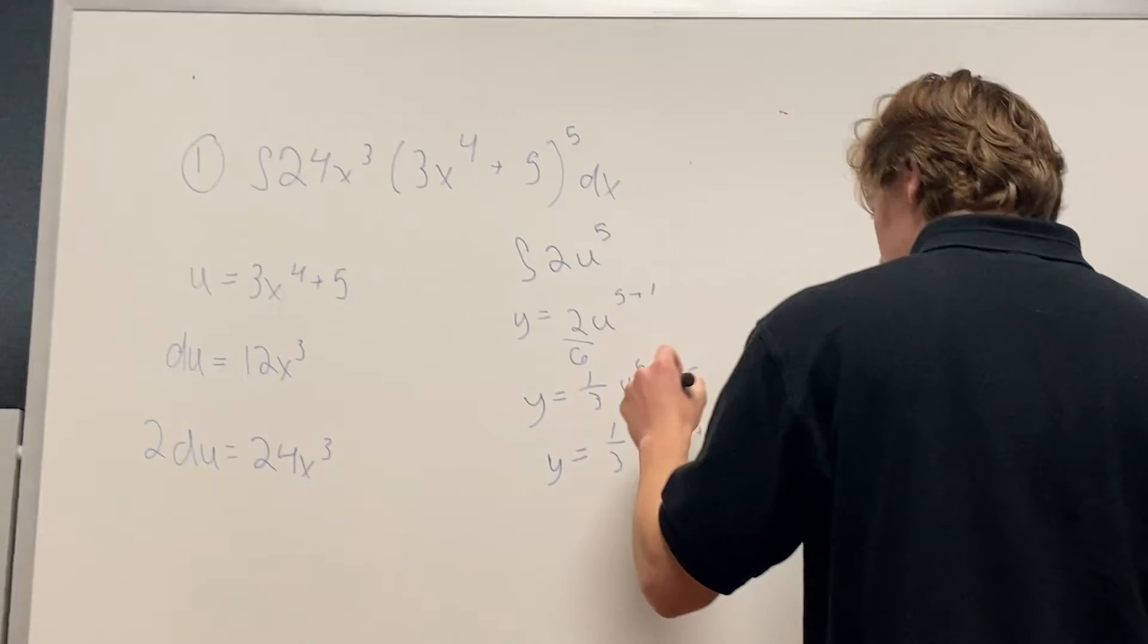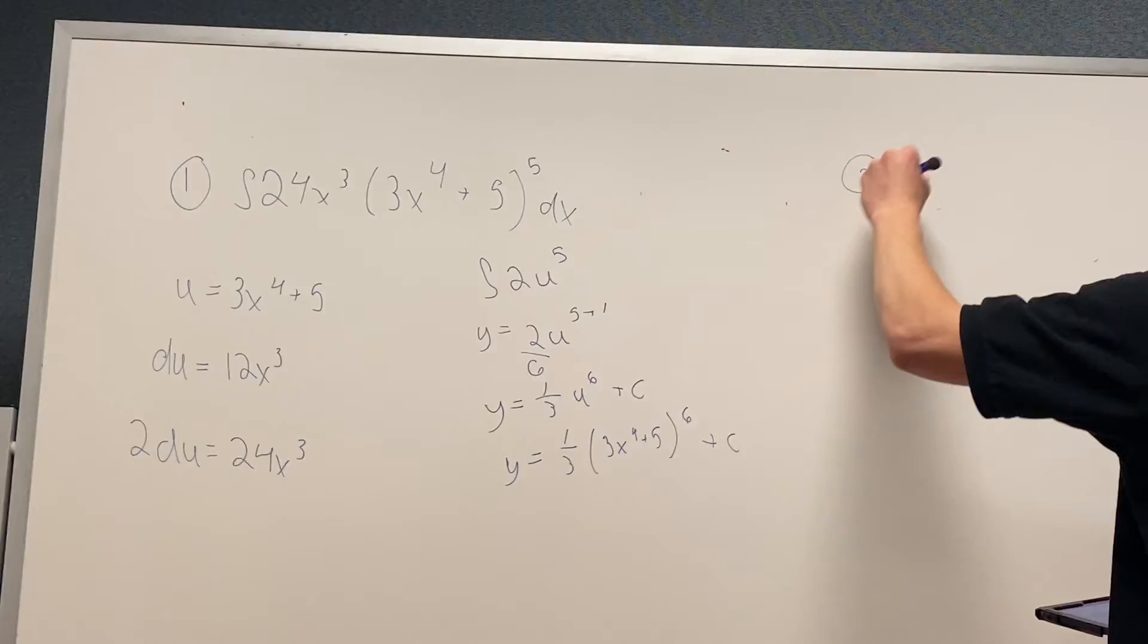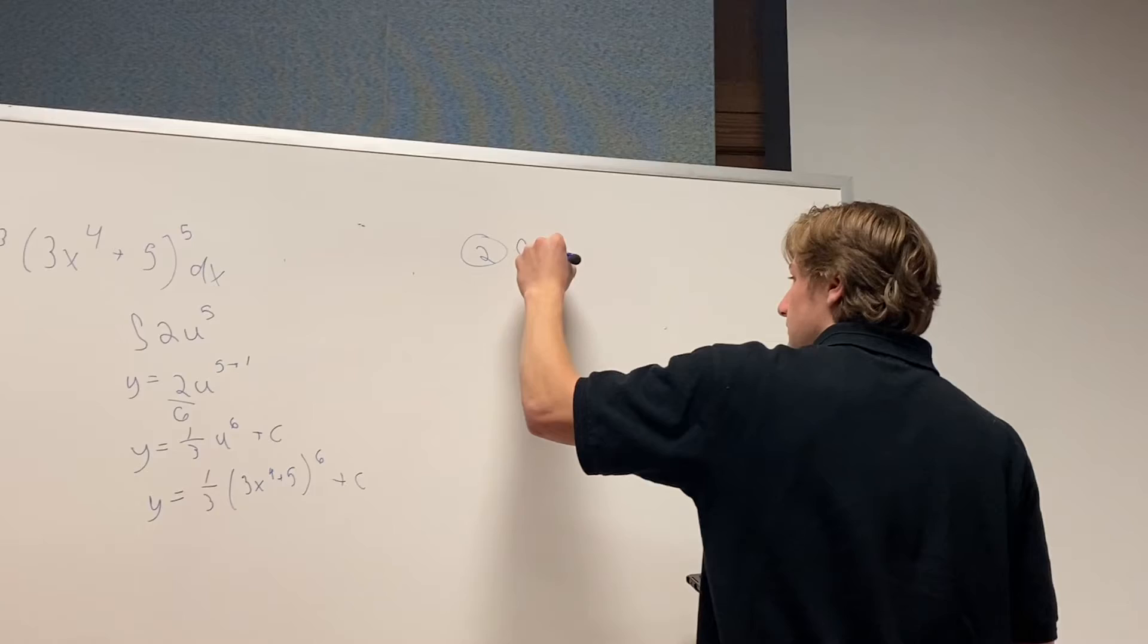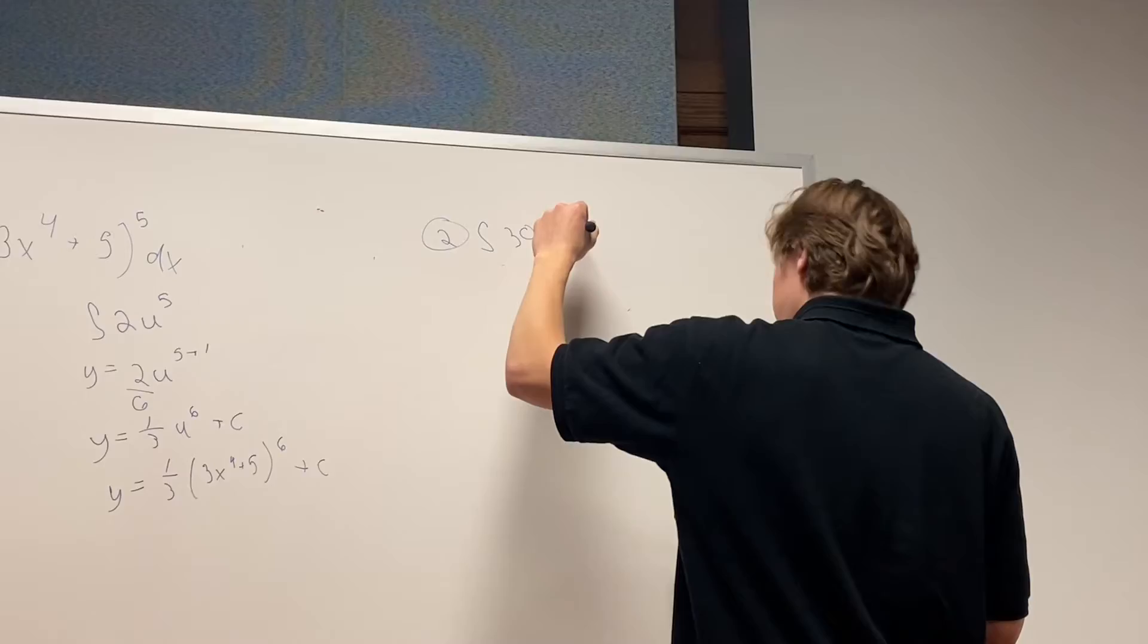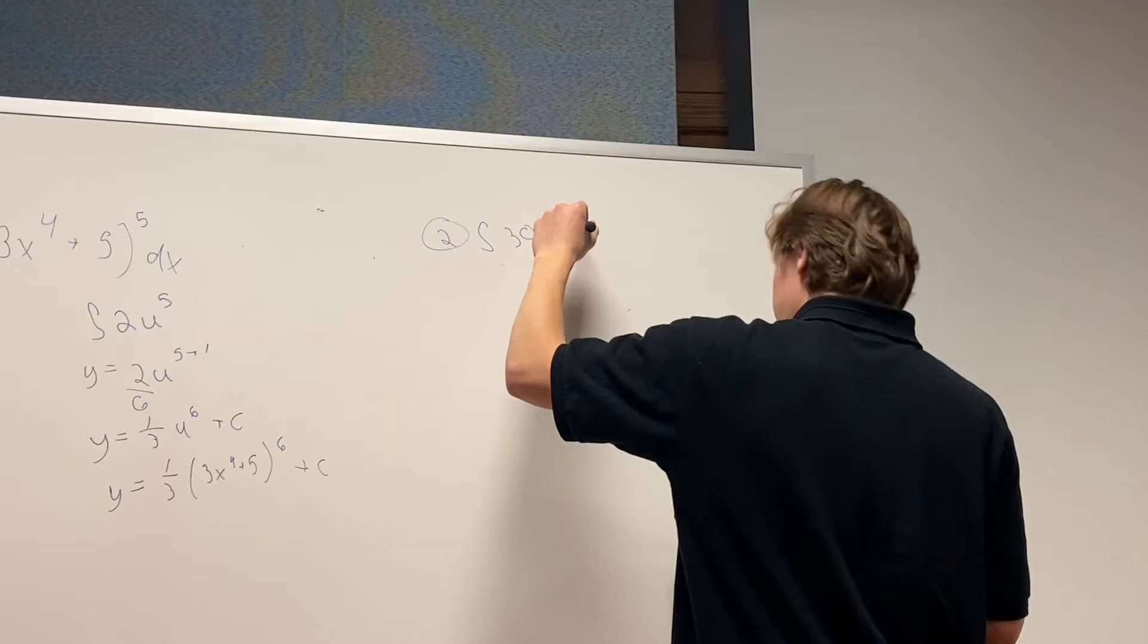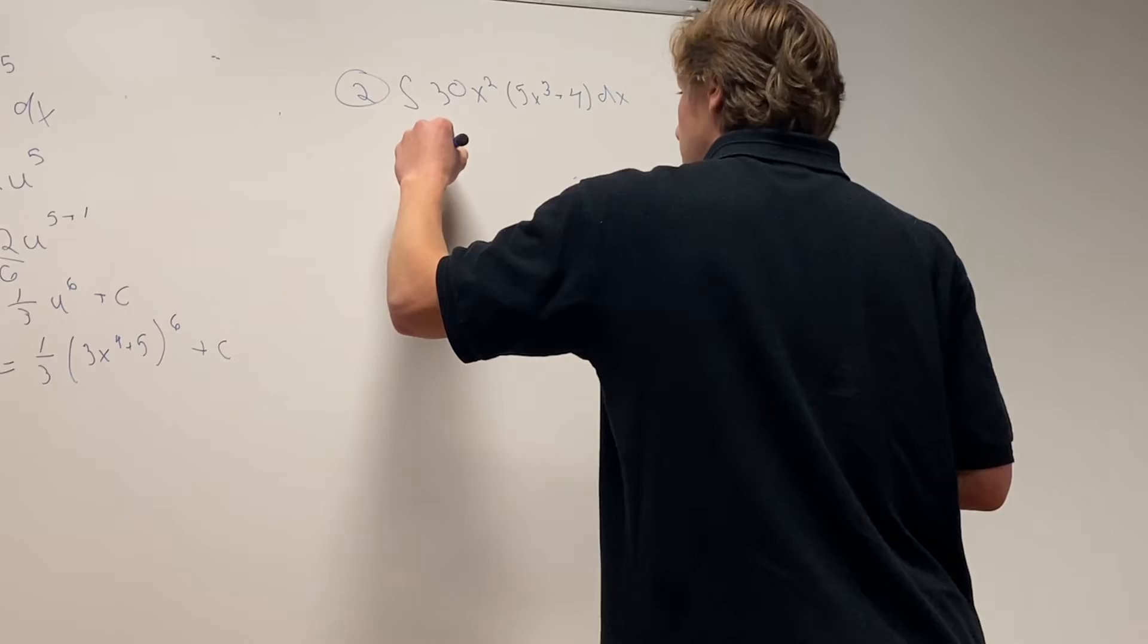And then the second one. We're going to do integral 30x squared times 5x to the 3rd plus 4 dx. So take the u first, u equals 5x to the 3rd plus 4.